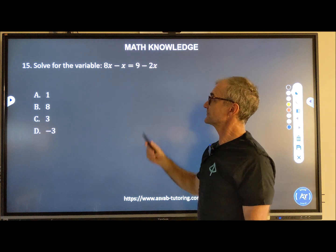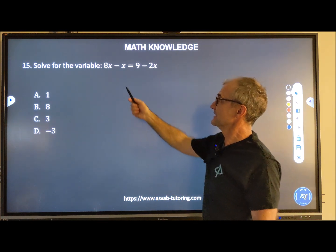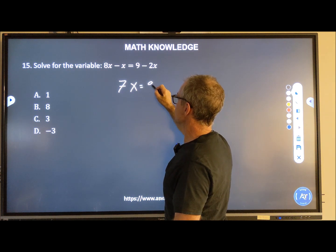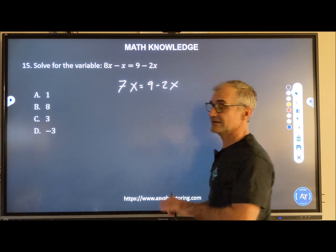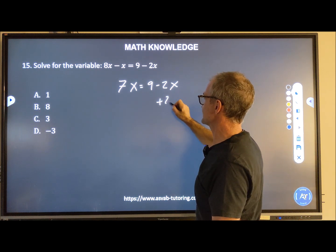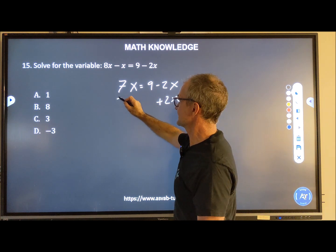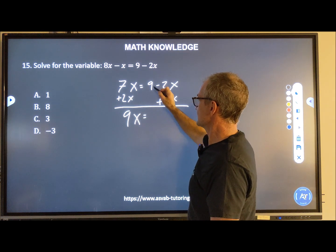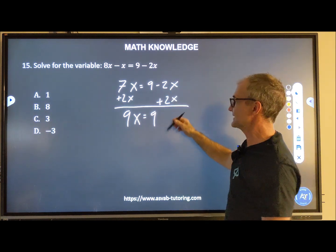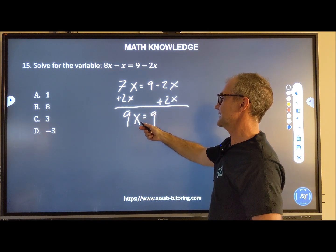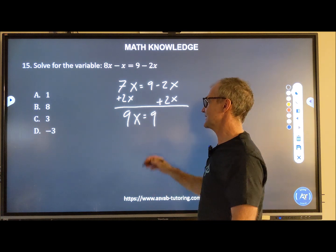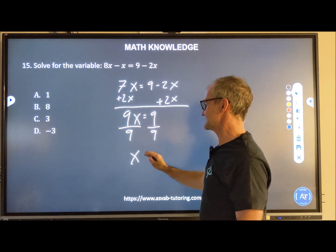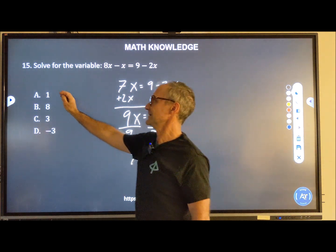Number 15, solve for the variable. That means get X all by itself. 8X minus 1X is 7X equals 9 minus 2X. Trying to get all the X's by themselves, so I'm going to add 2X to both sides. 2X and 7X is 9X is equal to 9. These things cancel out. That's why I did that. And I'm still trying to get X by itself. This is multiplication. The way I reverse that process is division. So I divide both sides by 9, giving me X is equal to 1, or answer A right here.